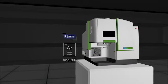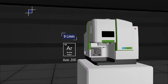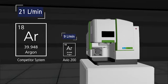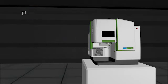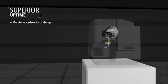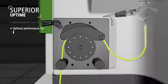By operating on just 9 liters of total argon per minute, the system offers a more than 50% reduction on the volumes required by comparable instruments. Altogether, the Avio 200's patented technologies make multi-element analysis as streamlined as a single element run.